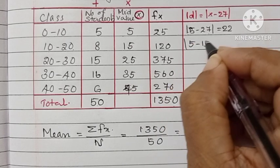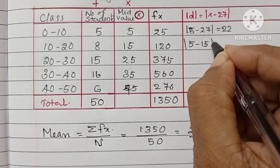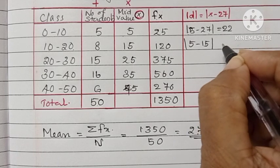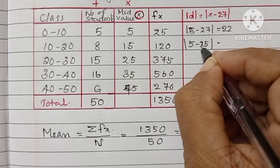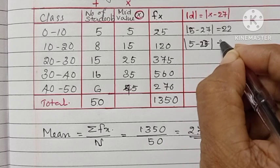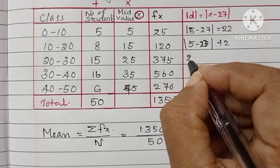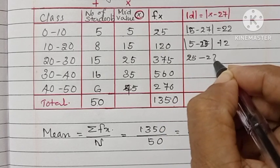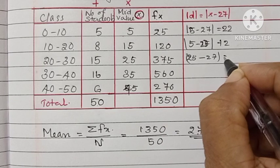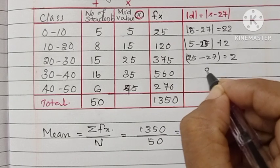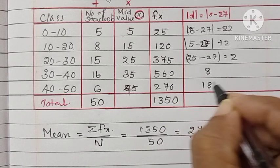After that, 15 minus 27, it will be minus 12. We are taking only 12. Answer is 2, 8, then 18.